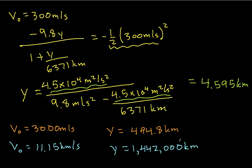So you can see that as the initial velocity gets faster and faster and faster, the distance gets larger and larger and larger. Now, if I look at the denominator here, you can see that this will be the case as long as this term is less than this term. When this term is exactly equal to 9.8 meters per second squared, Y goes off to infinity.